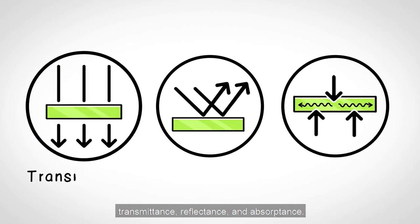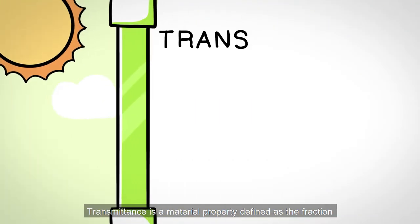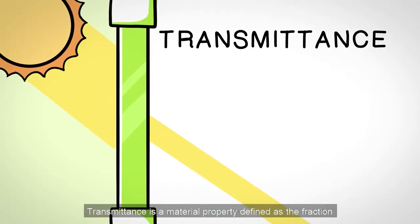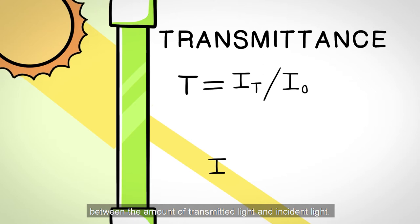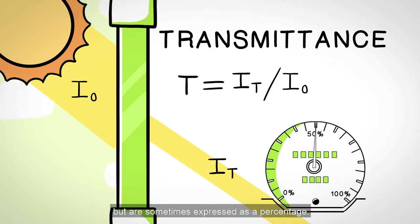Light interacts with matter according to three main pathways: transmittance, reflectance, and absorptance. Transmittance is a material property defined as the fraction between the amount of transmitted light and incident light. This is a unitless number between zero and one, but is sometimes expressed as a percentage.